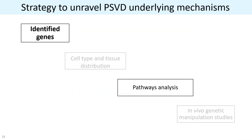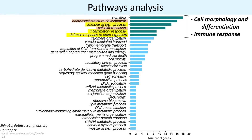We then analyzed whether these genes regulate common biological pathways using the Gene Ontology database. We listed our pathways depending on the number of genes identified in each pathway. For pathways where more than eight genes have been implicated, we found three pathways related to immune response and two pathways implicated in cell morphology and differentiation.